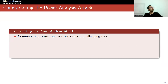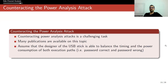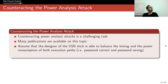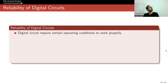Our first countermeasure didn't work. So how can we overcome this problem? Counteracting the power analysis attack is a challenging task — many publications are available on this topic. Assume that the designer of the USB stick is able to balance the timing and power consumption of both execution paths — that is, password correct and password wrong. Instead of introducing a NOP operation, you introduce an operation that consumes the same amount of power. Let's say we can do that. Then the next question is: can we still break the system? Now I cannot get timing information — it is uniform. I cannot get power consumption data because it is again uniform. I cannot detect any strange behavior. The answer is still yes, and this is due to fault attacks.